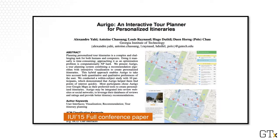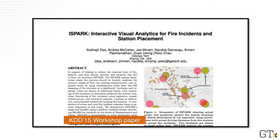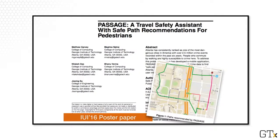Aurigo is a project for finding interesting paths or tourist attractions to visit in a new city. Another project is about the placement of fire stations — how do you place a fire station closest to fire incidents to cut down commute time? A third project is about how to find safe paths going from point A to point B. It's interesting because it's not only about getting between those two points quickly, but about doing so in a safe way.